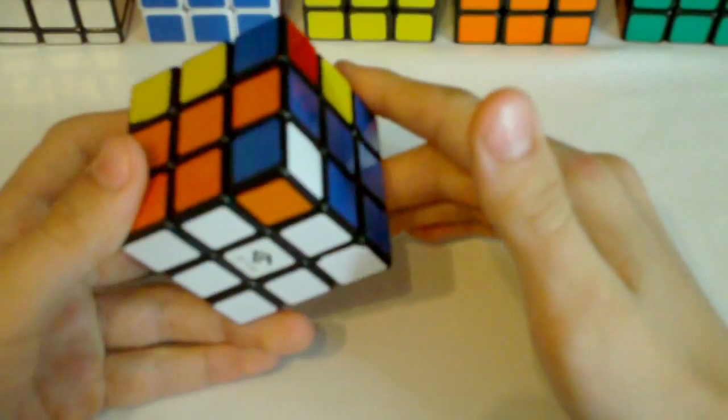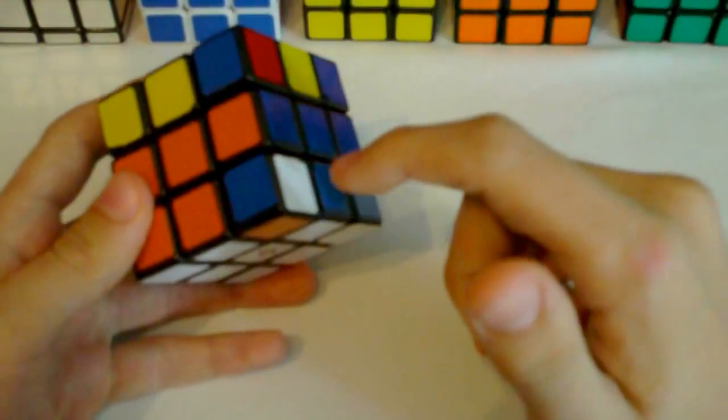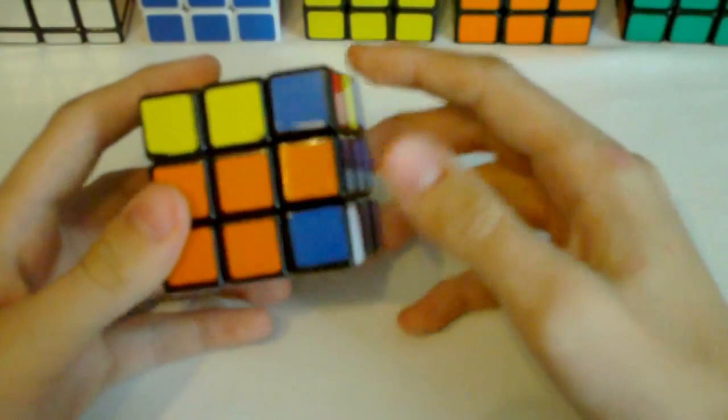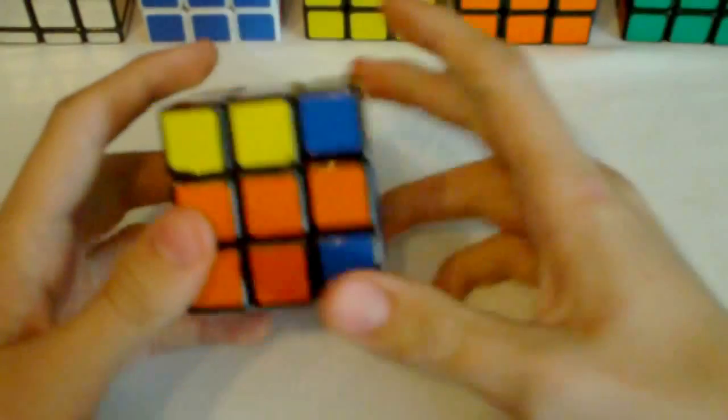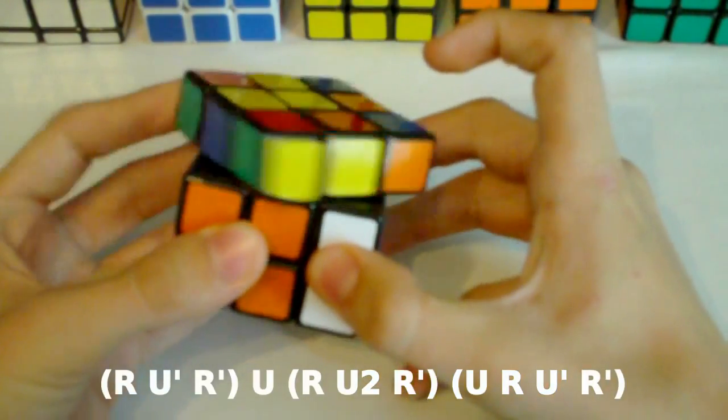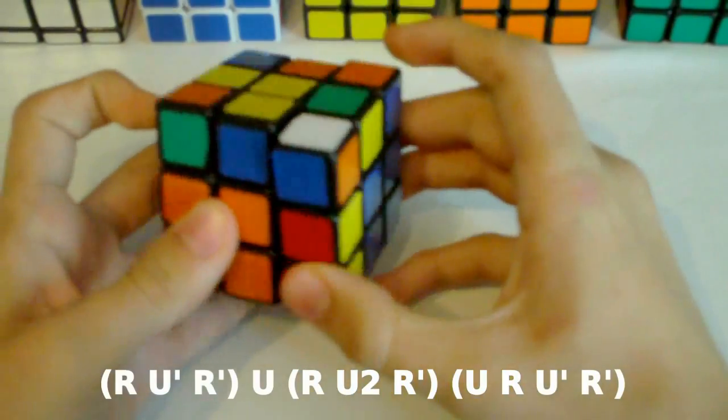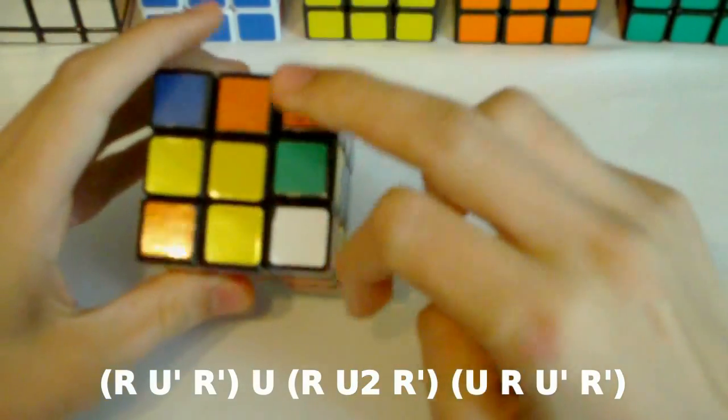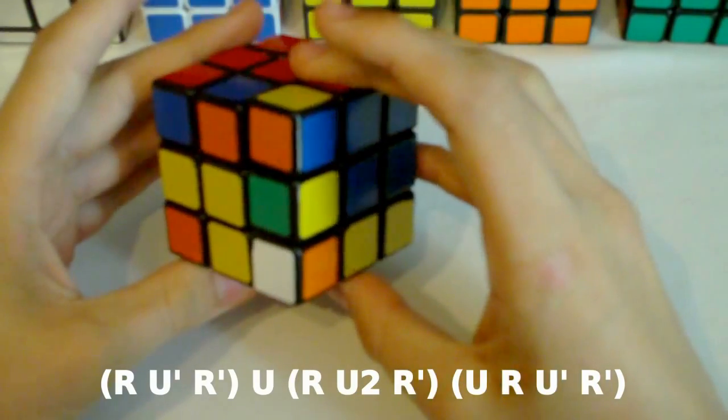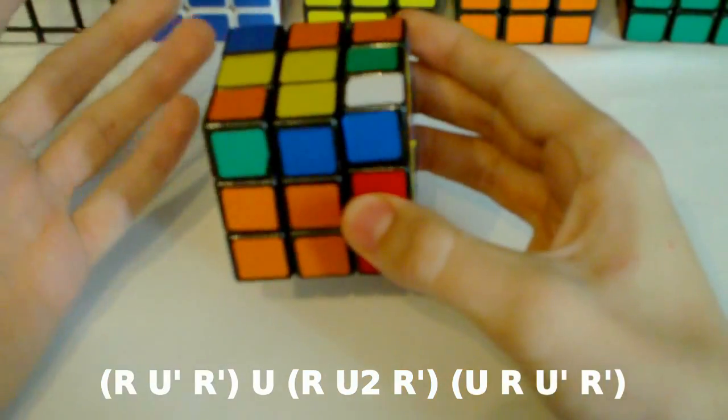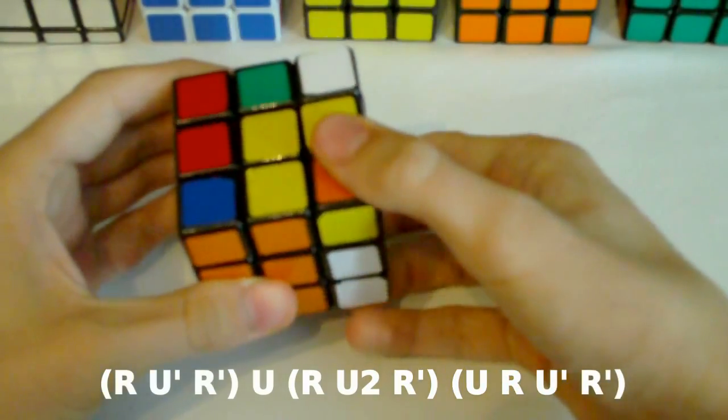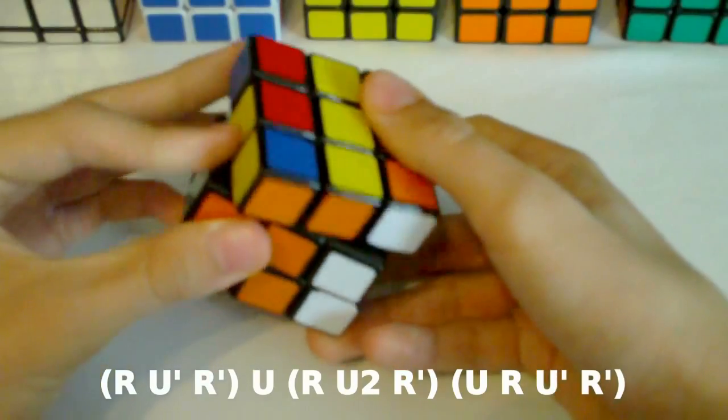And then this case is just an inverse of that. Here the corner is twisted counterclockwise. So the white sticker is facing to the right. So here we use this algorithm: R U' R' so that's how we get both of these pieces in the top layer and then you pretty much solve this the way you would usually solve it. So U R U2 R' U R U' R'.